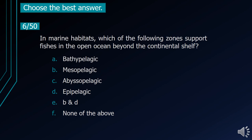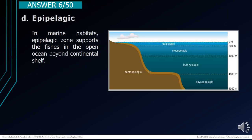Number 6. In marine habitats, which of the following zones supports fishes in the open ocean beyond the continental shelf? A. Bathypelagic. B. Mesopelagic. C. Abyssopelagic. D. Epipelagic. E. B and D. F. None of the above. The correct answer is letter D, Epipelagic. In marine habitats, the epipelagic zone supports fishes in the open ocean beyond the continental shelf.